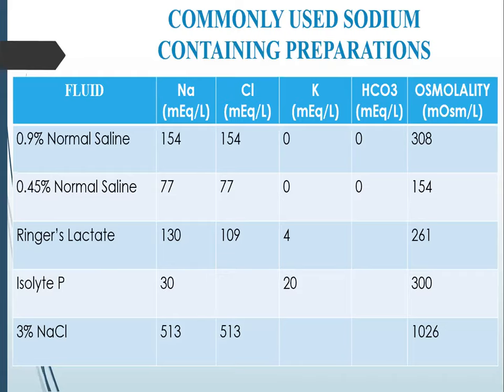0.45% normal saline has an osmolality less than 270 milliosmol per litre, so it is a hypotonic fluid. 3% NaCl has 1026 milliosmol per litre of osmolality, so it is a hypertonic fluid.